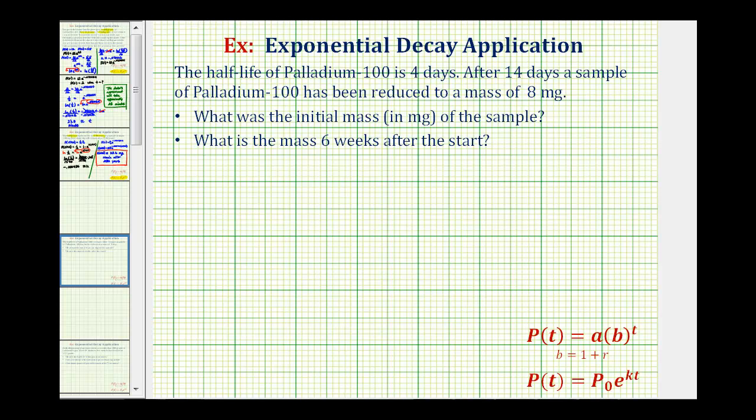To model the exponential decay, we have the option of using an exponential function in this form here or this form here. The major difference is, looking at this first form, the base b is equal to one plus r, where r is the decay rate per unit of time. And in the second function, k is the continuous decay rate per unit of time. But since this question does not ask us about decay rate or continuous decay rate, I think it's going to be easier if we use this form of an exponential function, especially since we're given the half-life.